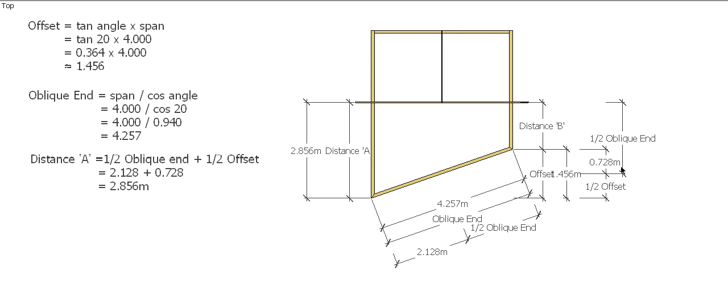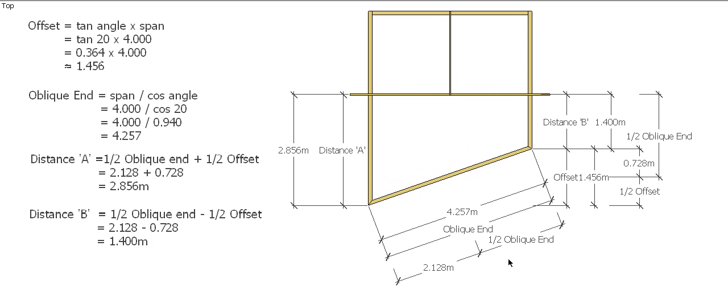We know what half our oblique end is. All we have to do is take away half our offset. So that's pretty simple. Half the oblique end minus half our offset. So 2.128 minus 0.728 gives us a distance of 1.400 meters. That's distance B. So now we can position our centering rafter on this side of the roof. That's really simple.